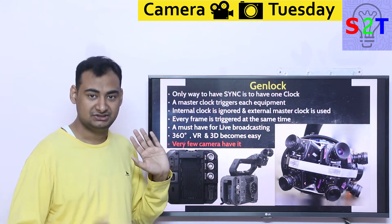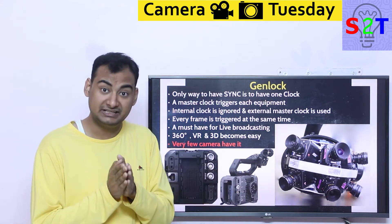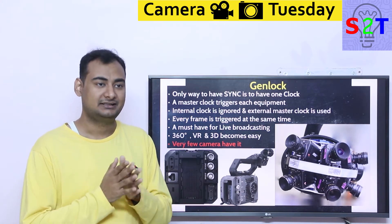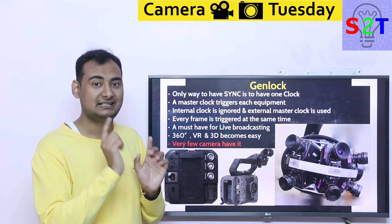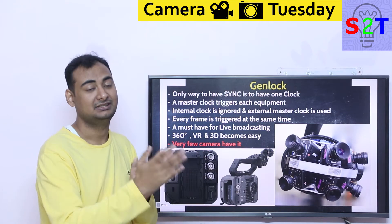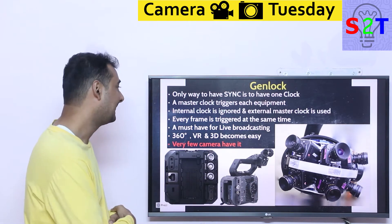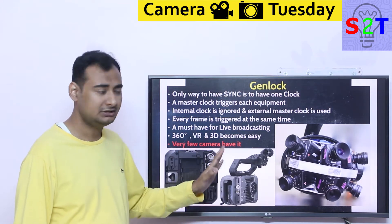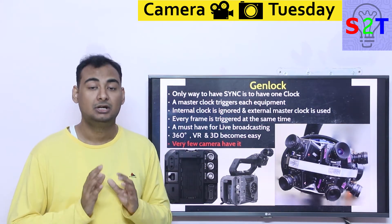The way genlock achieves sync is by creating a protocol that overrides everything. The master clock — whether it's a camera or a dedicated piece of equipment — triggers each device based on its own signal: frame number one, go. Every piece of equipment captures at that exact moment, even if its internal oscillator thinks it should be at frame four. That's why it's called a lock — it used to be called generator lock. Even if the master clock itself starts to drift, there's no issue because audio and video are both following the same master.